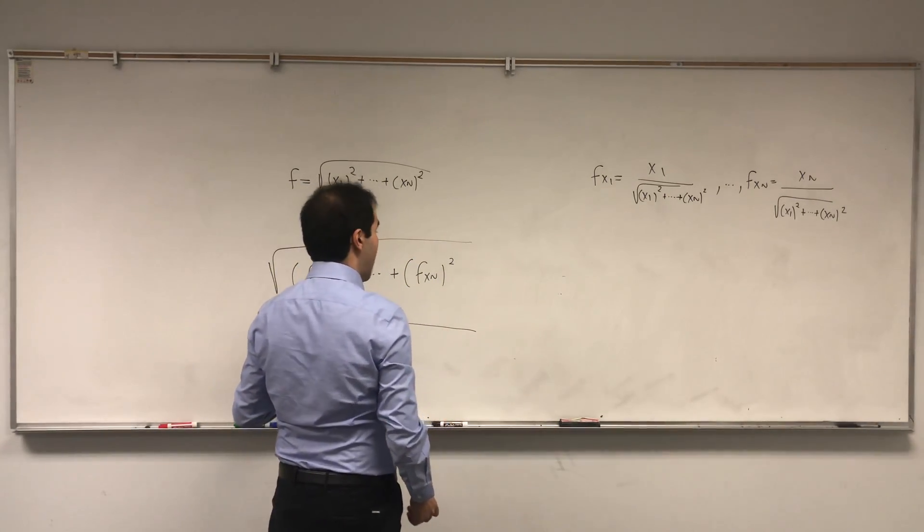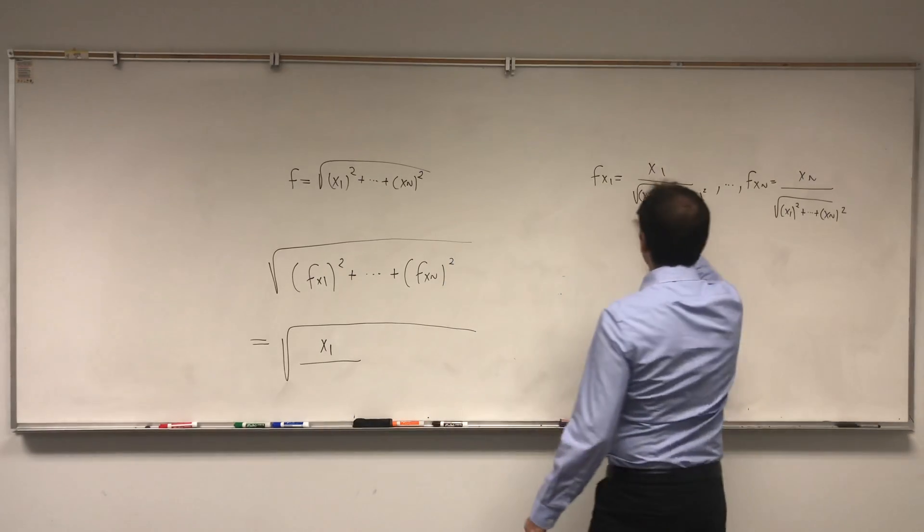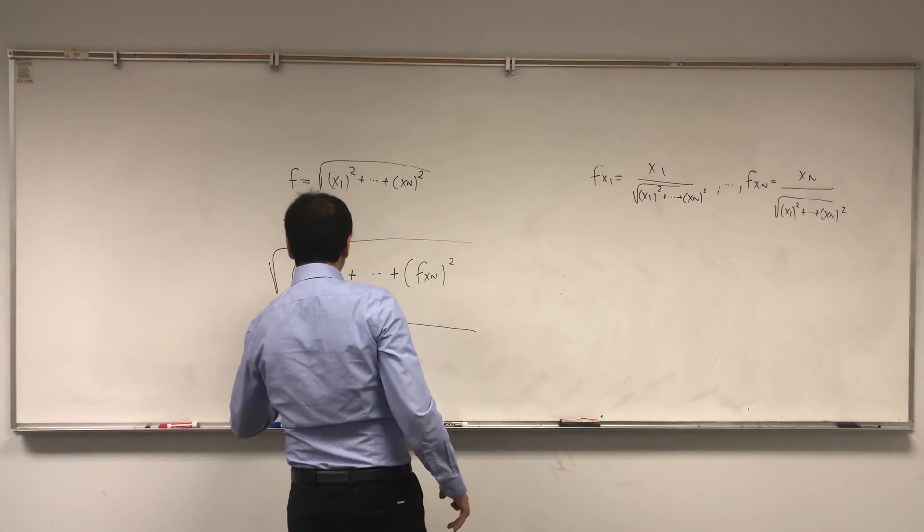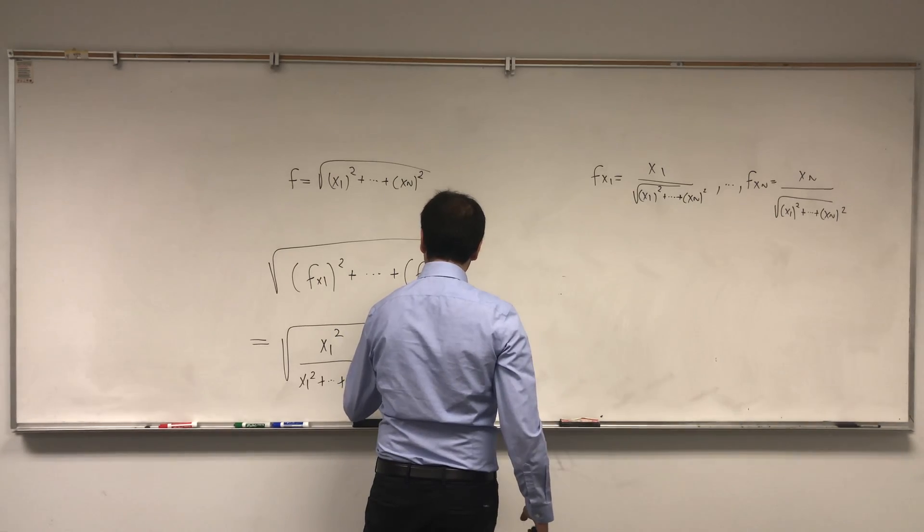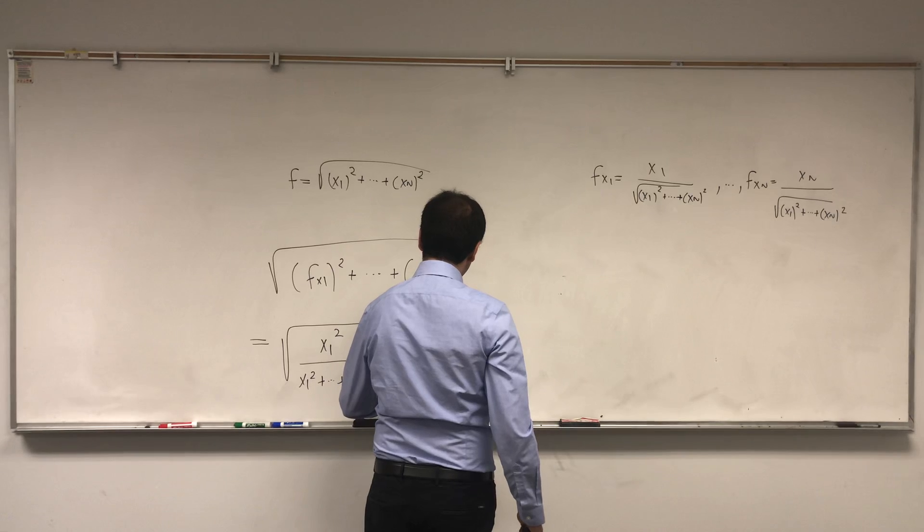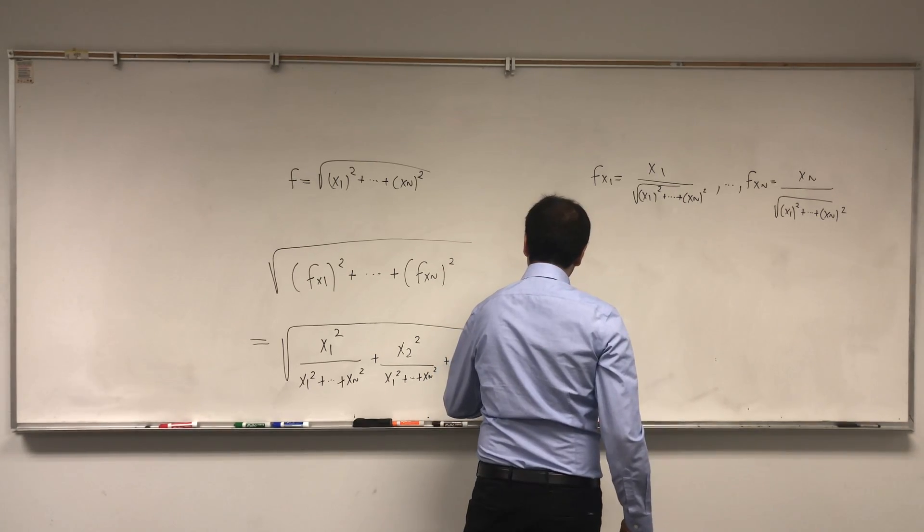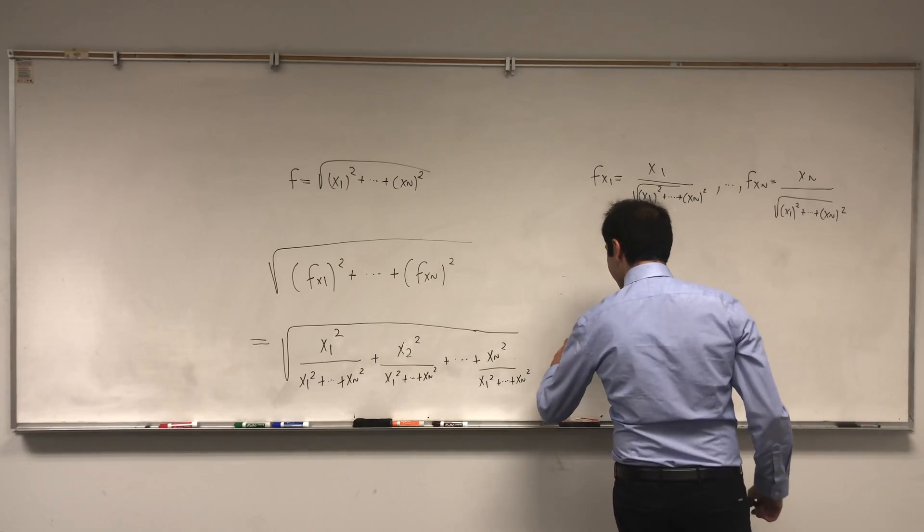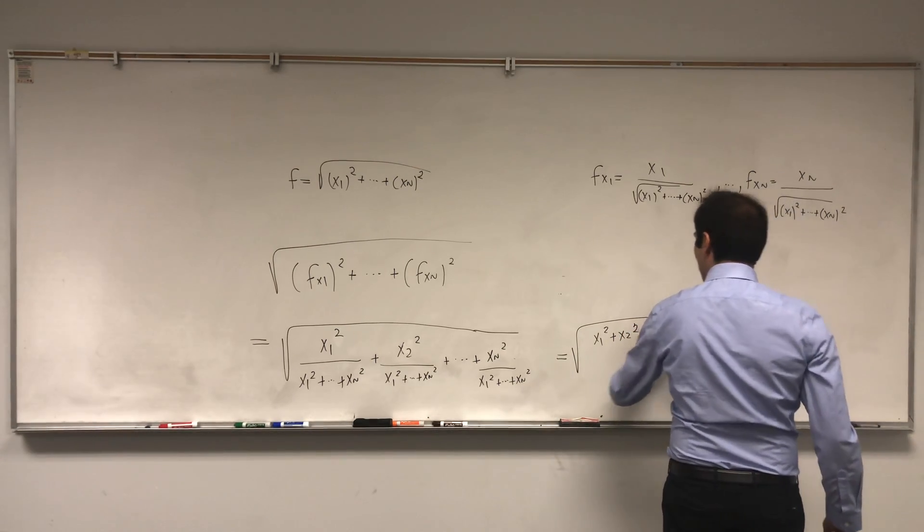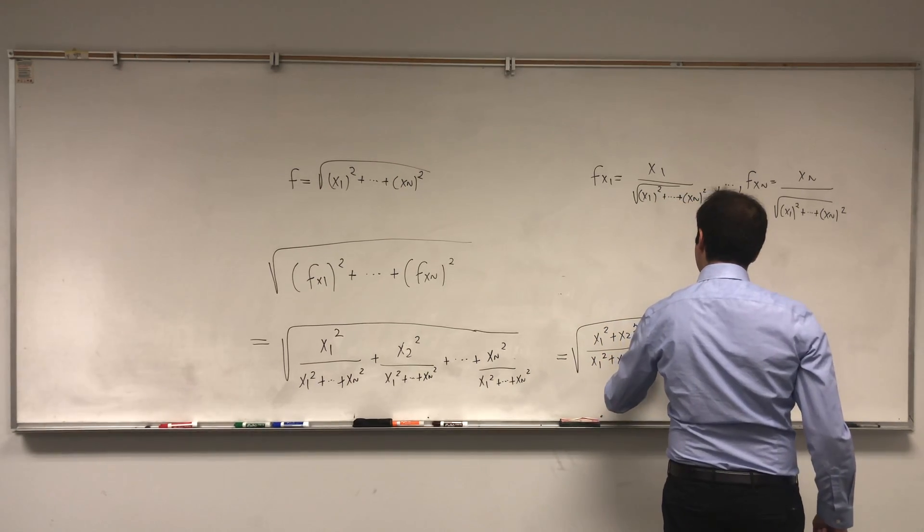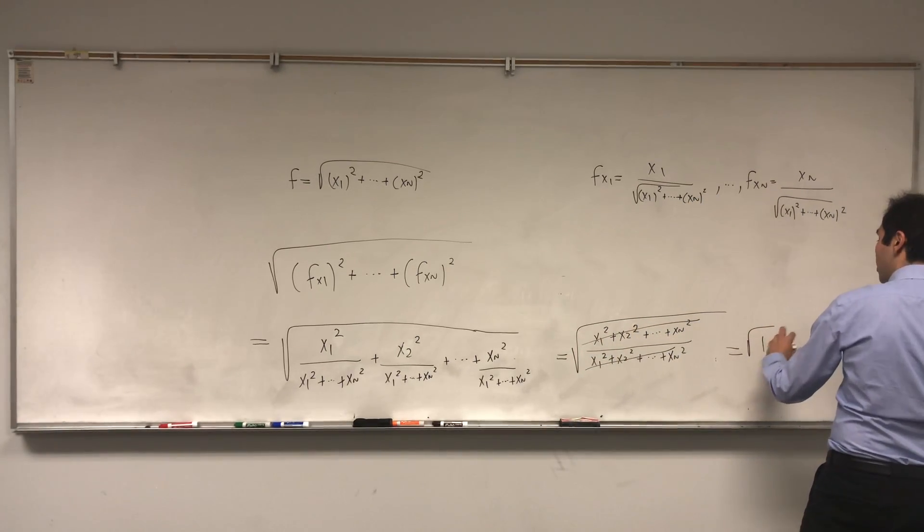Okay, then fx1 is x1 squared over, so in other words, you take x1 over this square, so you square everything, and you get x1 squared over x1 squared plus dot dot dot plus xn squared plus x2 squared over x1 squared plus dot dot dot plus xn squared, and what you're left with is square root of x1 squared plus x2 squared plus xn squared over x1 squared plus dot dot dot plus xn squared, and notice this cancels out, and you end up with square root of 1, which is 1.